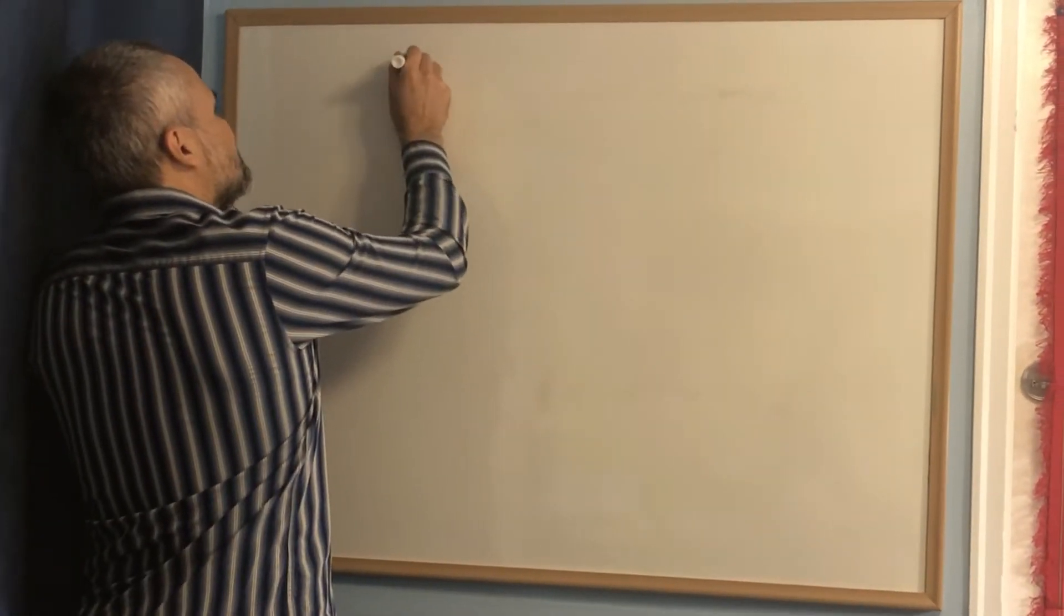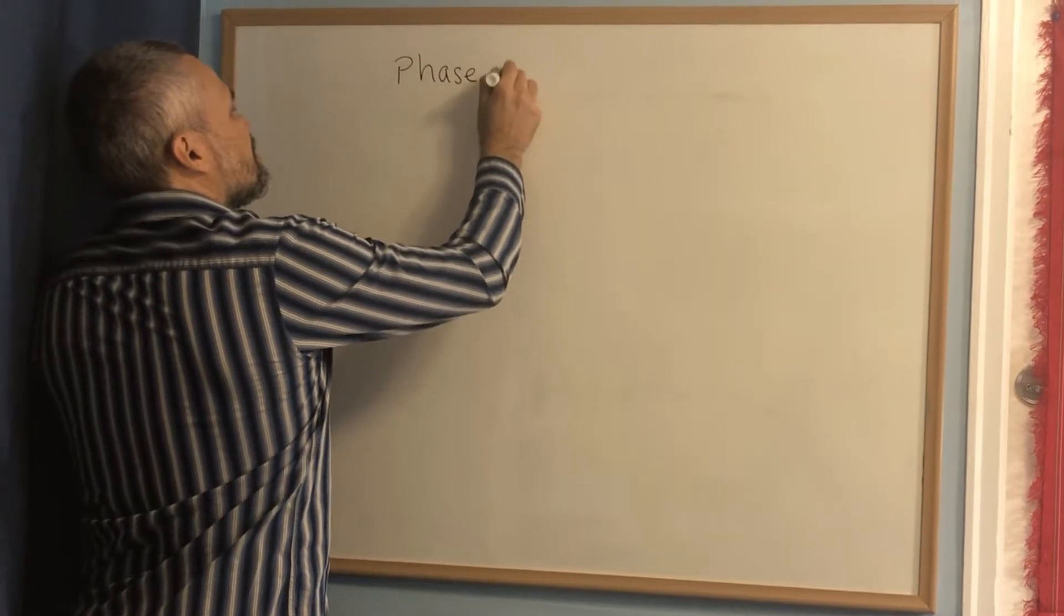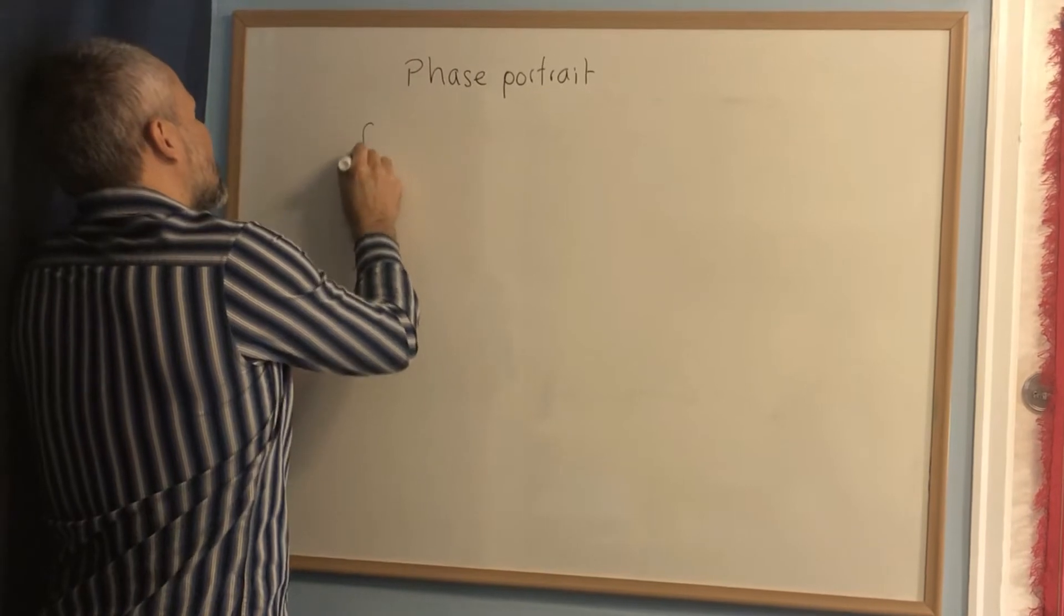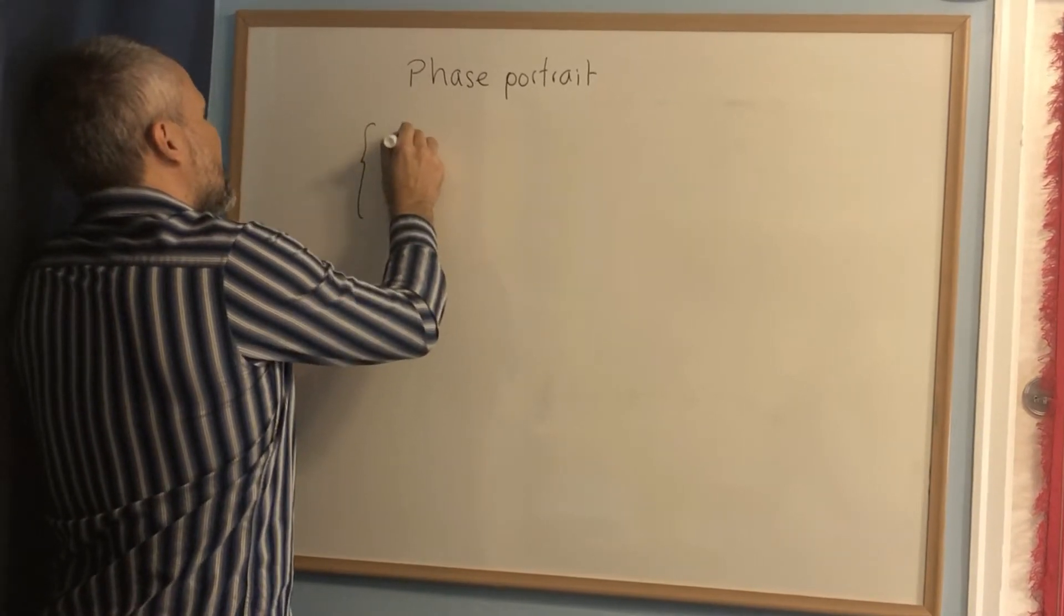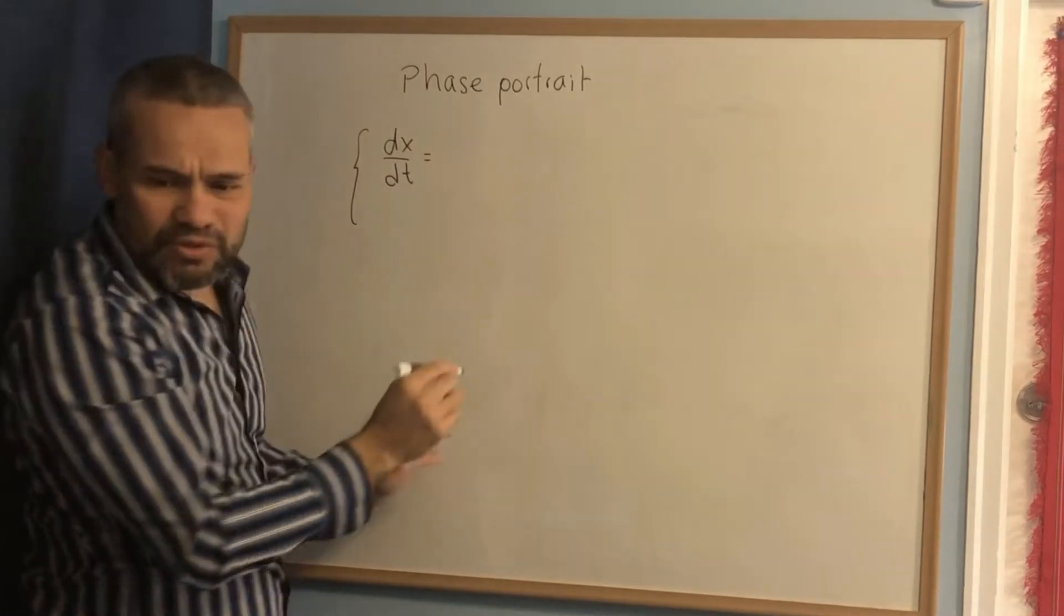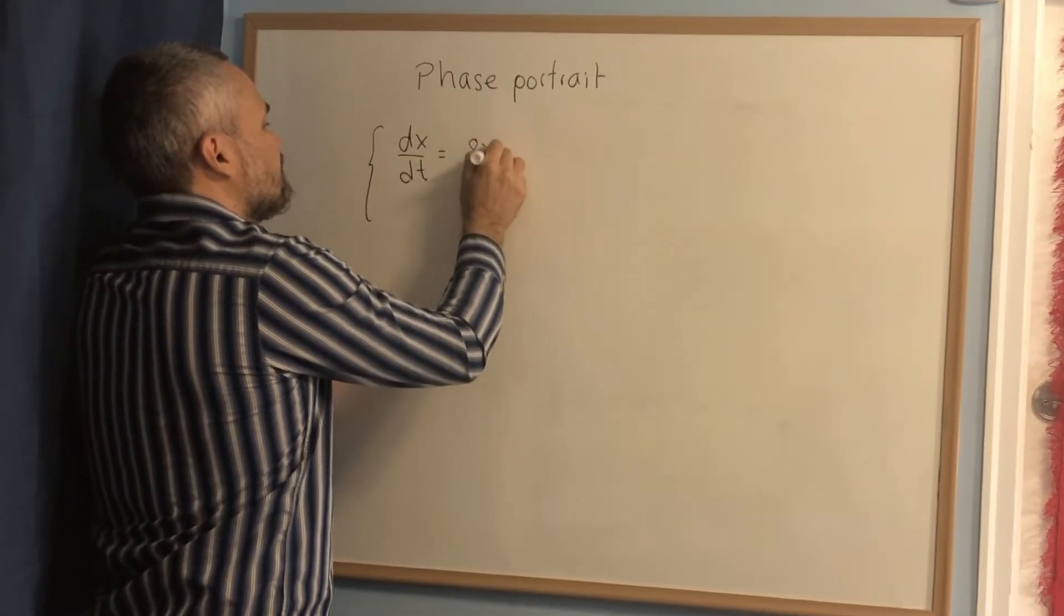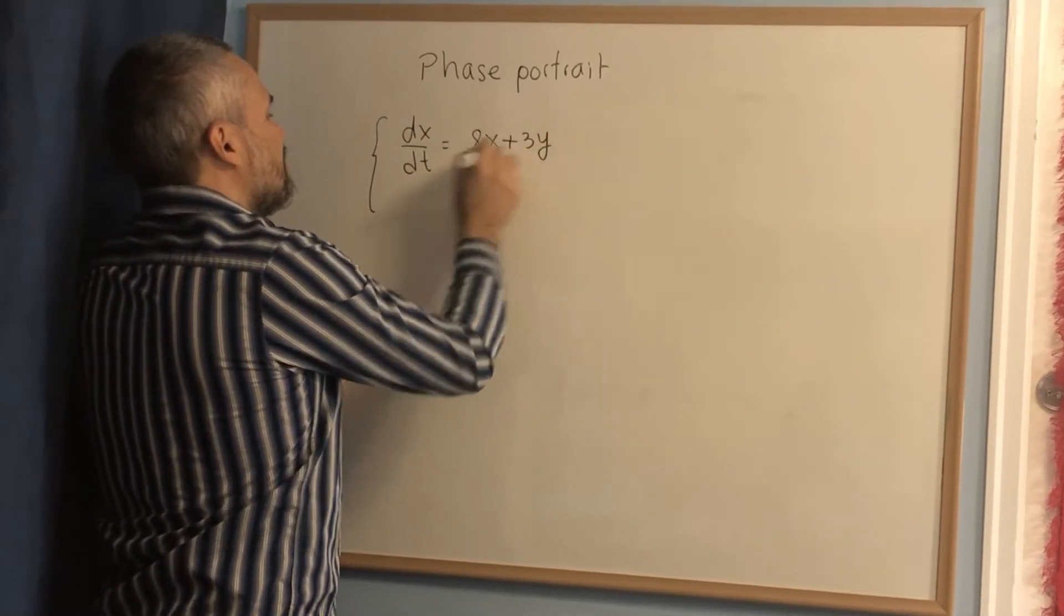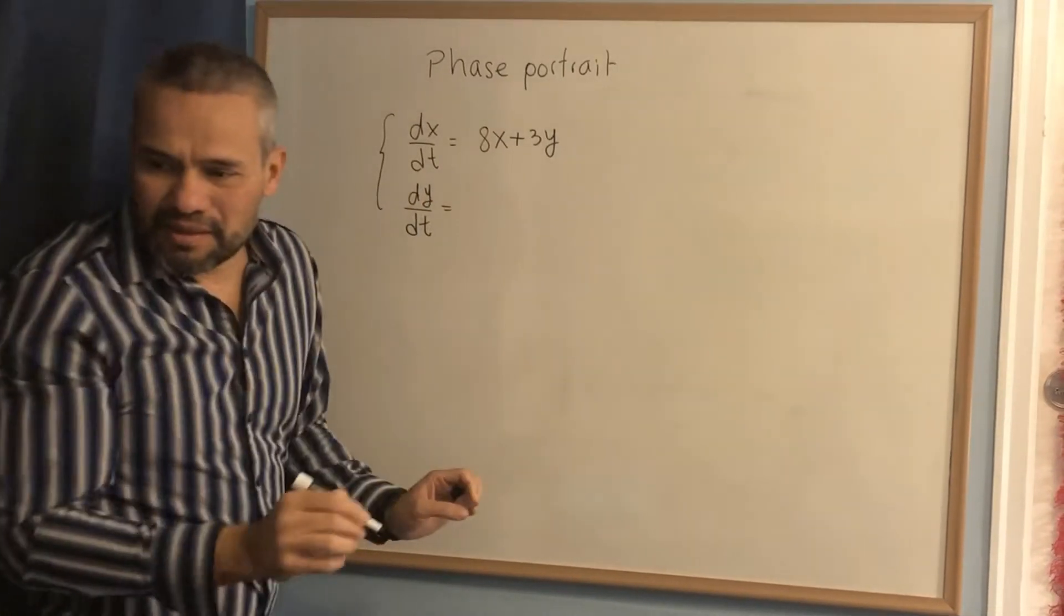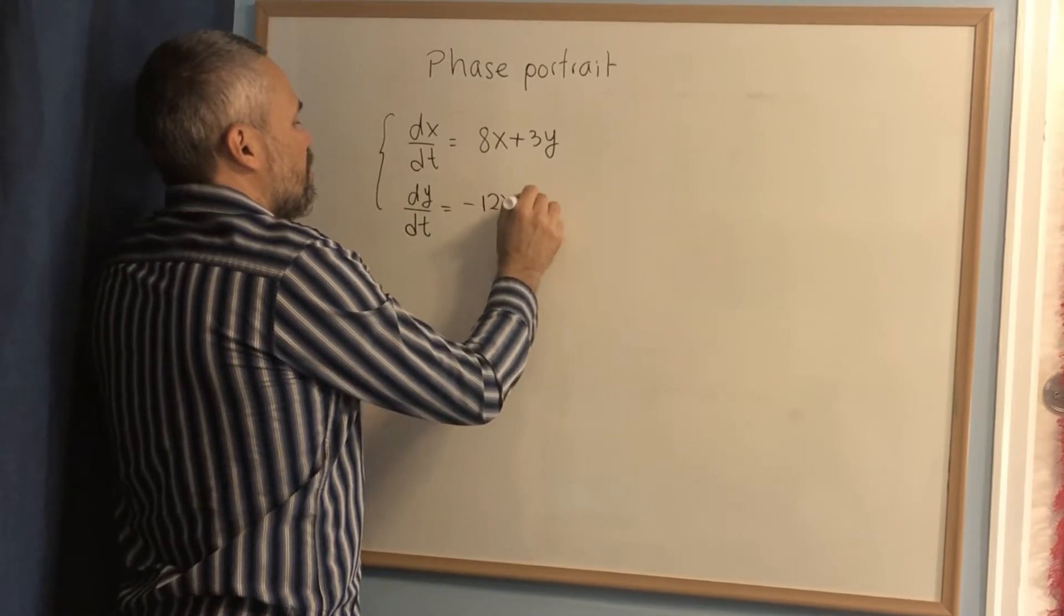Let's have another example of a phase portrait. We are going to consider this linear system: dx/dt equals 8x plus 3y, and dy/dt equals negative 12x minus 4y.